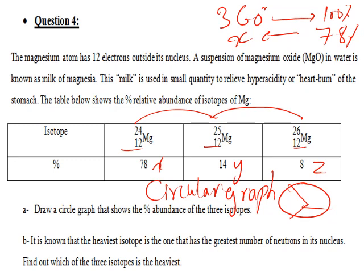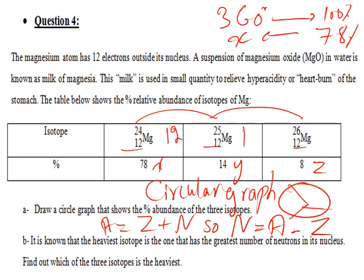The heaviest isotope has the greatest number of neutrons. Calculate neutrons for each: Mg-24 has 24 minus 12 equals 12 neutrons; Mg-25 has 25 minus 12 equals 13 neutrons; Mg-26 has 26 minus 12 equals 14 neutrons. So the heaviest isotope is Mg-26. Good luck for your exam!